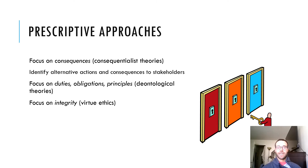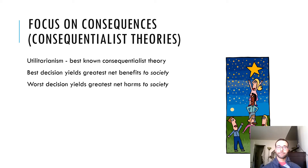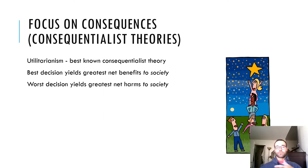We'll look at Aristotle for virtue ethics. Focusing on consequentialist theories, particularly utilitarianism — perhaps the best known consequentialist theory — this theory essentially states the greatest good for the greatest number. The best decisions yield the greatest benefits for society, and the worst decisions yield the most harms to society. We can see this as a consequentialist theory because what we think of as right and wrong is dependent on the consequence of a particular action. Something that leads to a net good is good; something that leads to a net bad is bad.